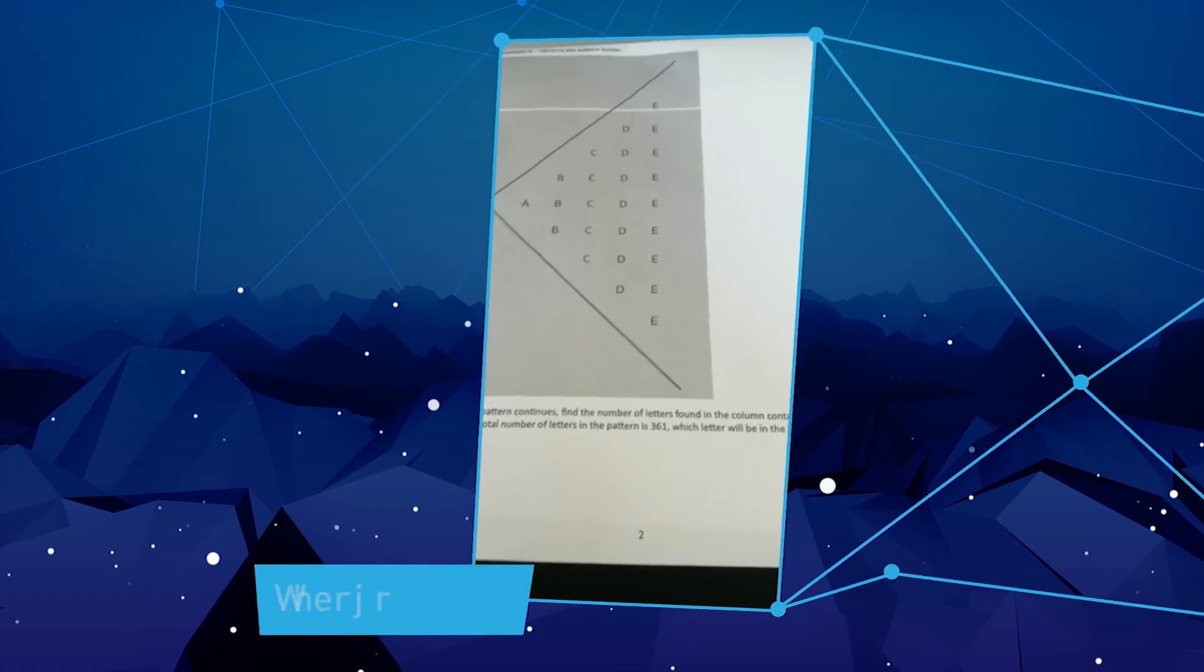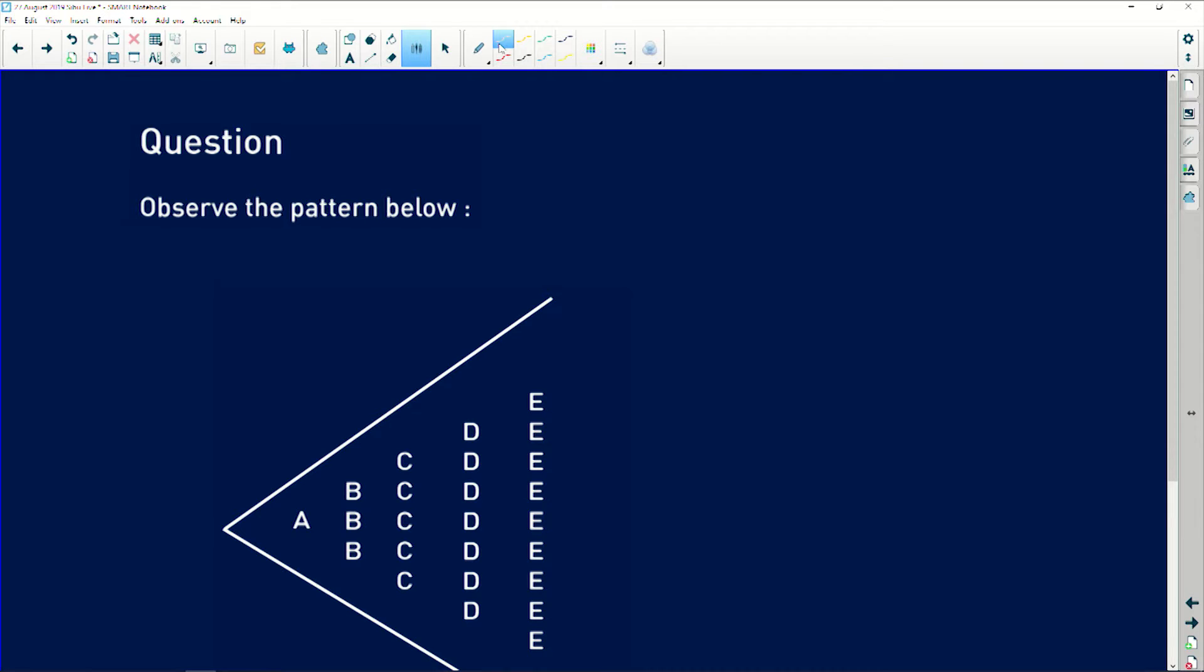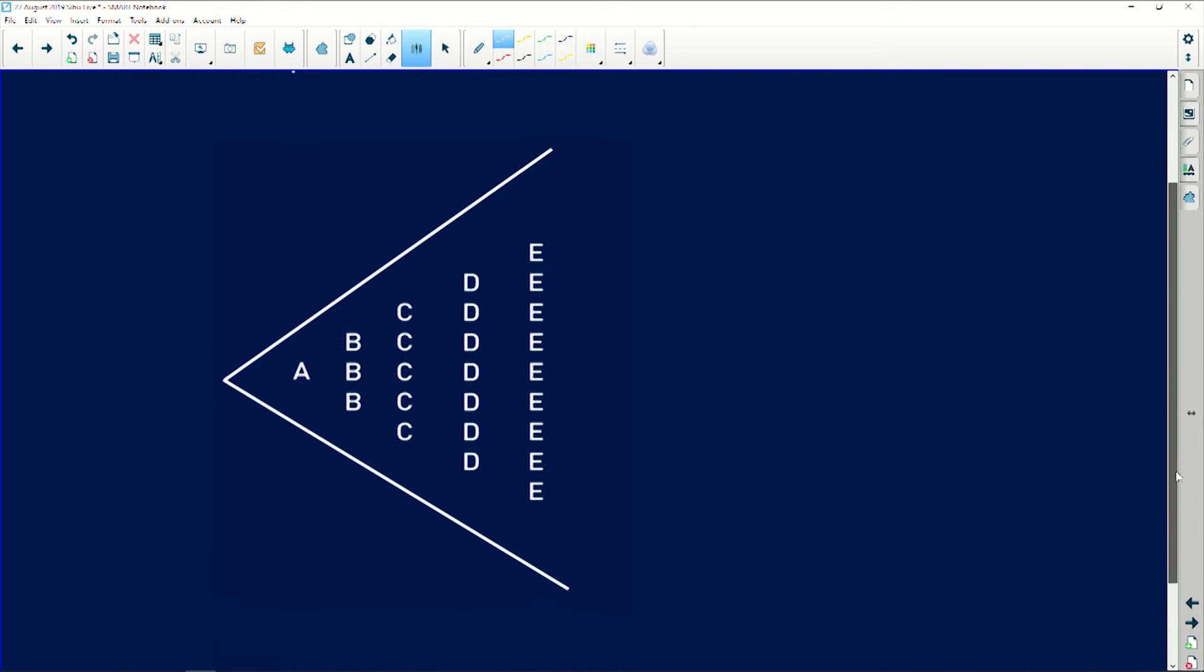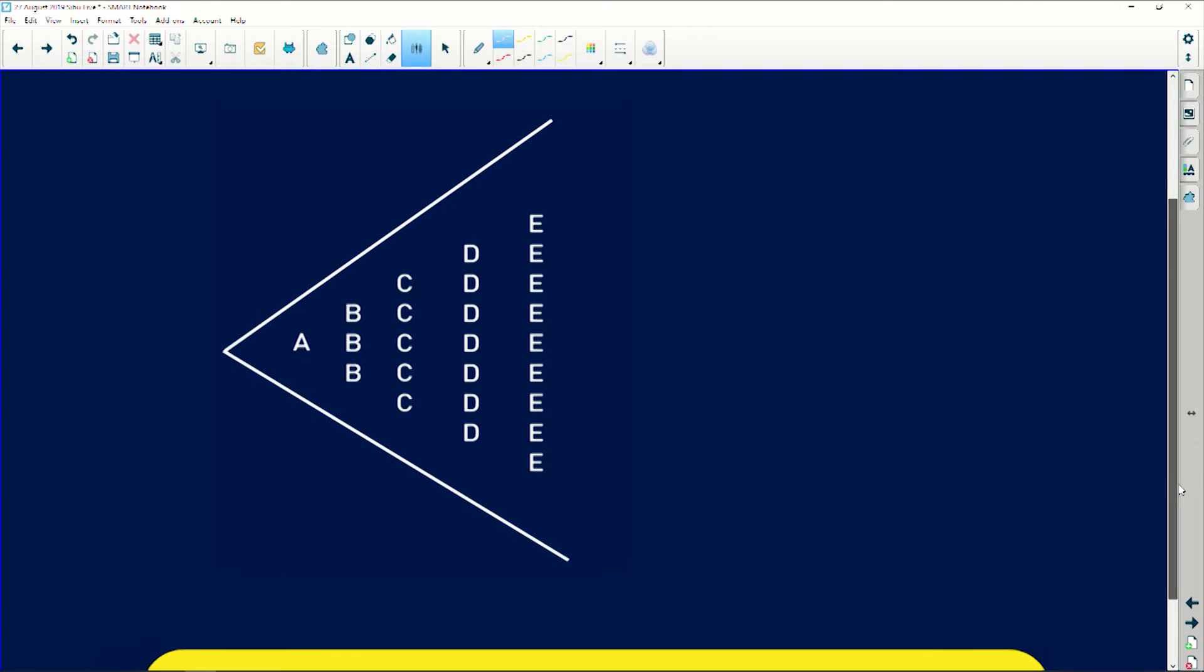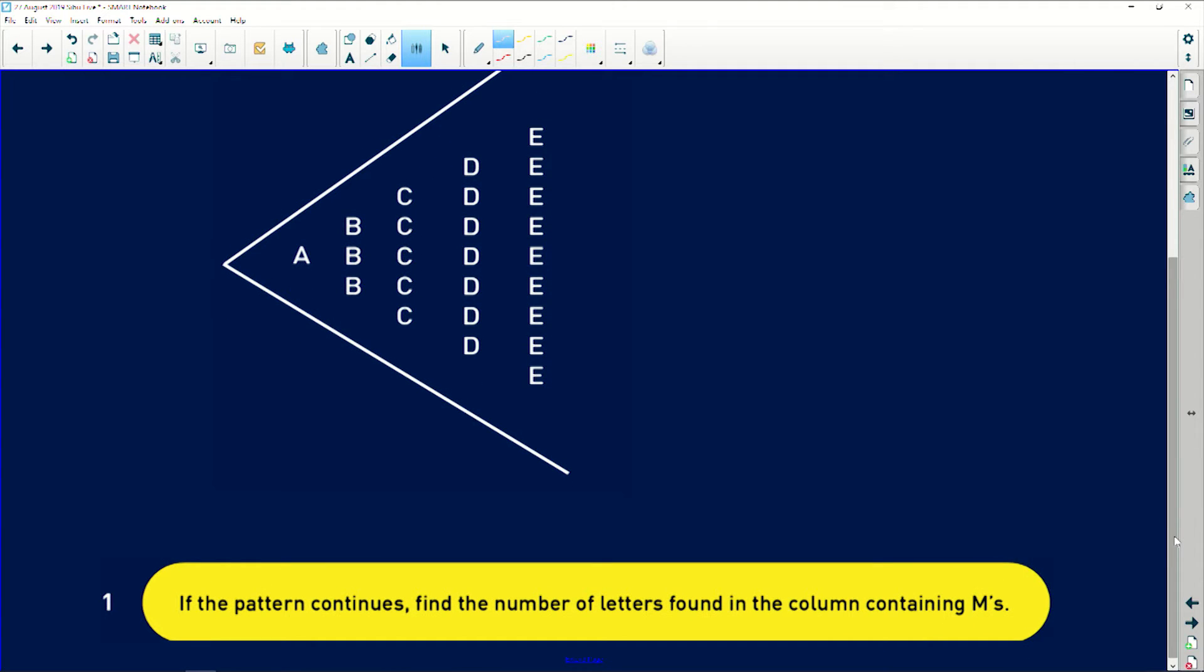It says observe the pattern below. It's got A's, B's, C's, D's, as well as E's, and it's going to continue like this all the way, maybe probably all the way up to Z.